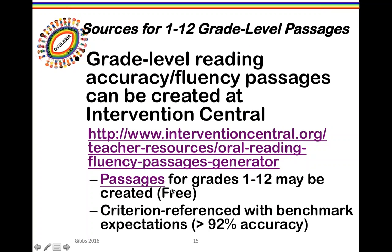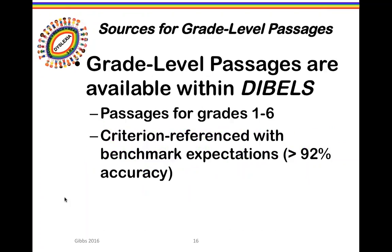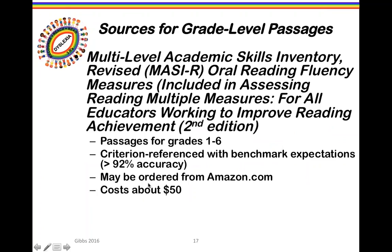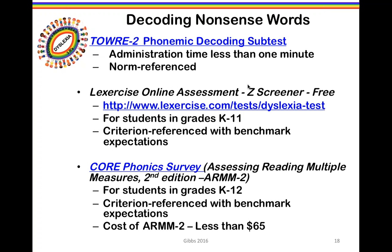Intervention Central generates a scored sheet for the examiner and a clean sheet for the student to read — a very helpful tool. It allows you to take any passage from any text and turn it into an accuracy-level determination passage for any grade. You can also find passages within DIBELS and in the book 'Assessing Reading: Multiple Measures,' which is a very valuable resource filled with assessments you may copy for school use.